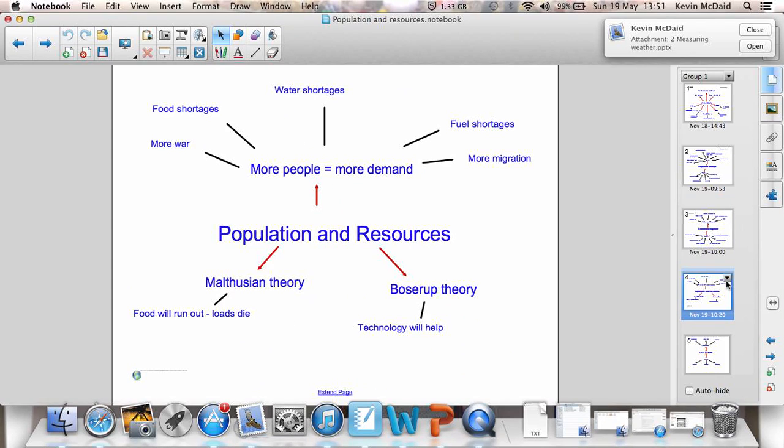So, resources and population, both very much linked. There are more people in the world, but there are the same amount of resources. So, we are going to mean that in the future there will be food shortages, there will be water shortages, fuel shortages. There will be more migration from places in the world that have very little to places in the world that have a lot. It's going to be more conflict, more war.